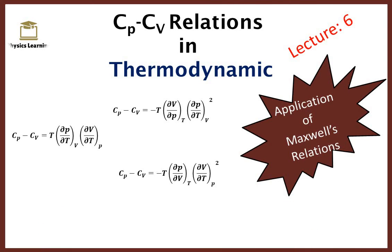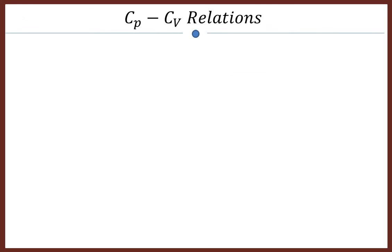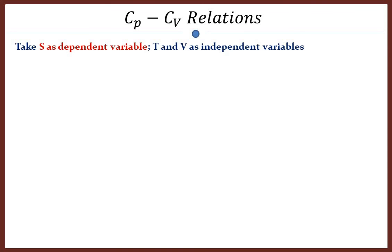We will derive the Cp minus Cv relation and see its applications. In order to derive the relationship between Cp and Cv, we start with an assumption that entropy of a system depends on temperature and volume. We can assume S, which is entropy, as the dependent variable and temperature and volume as independent variables. Thus we can write S as a function of temperature and volume.